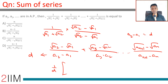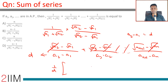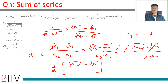We have (1/d) times [(√a2 - √a1) + (√a3 - √a2)] all the way through — this telescopes, terms cancel, and we are left with (1/d)(√a_{n+1} - √a1).